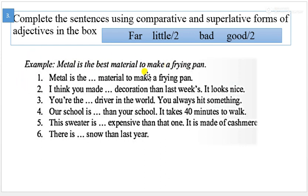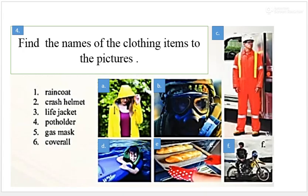For example, metal is the best material to make a frying pan. This one is the first exercise. A second, a third, a fourth, a fifth, a sixth. How can we change these adjectives? Look at these pictures.